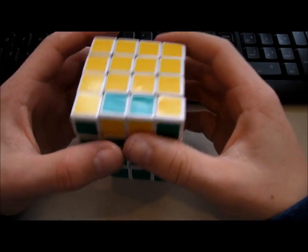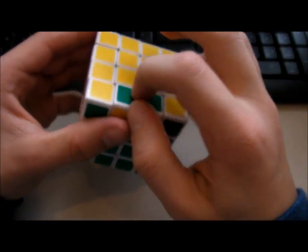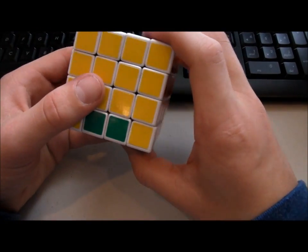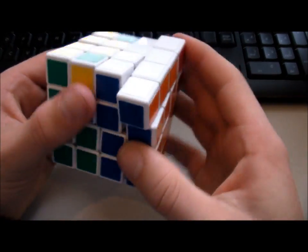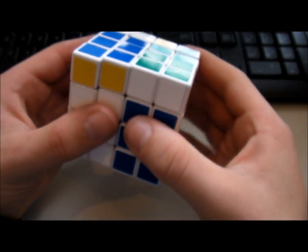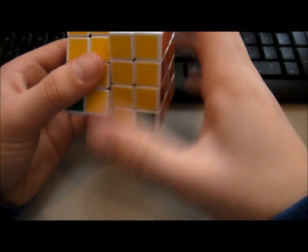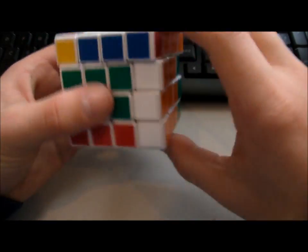Now the only exception to this would be this kind of case where you have the two unpermuted edges. There is no way around this, you just have to do the nice long algorithm. And then finish the cube, of course.